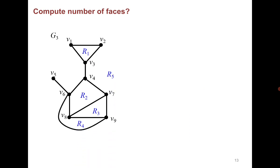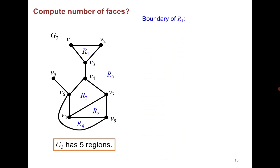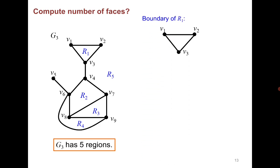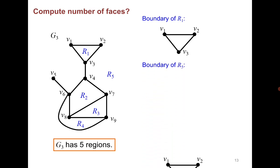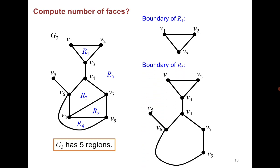The number of faces comes out to be 5. The boundary of the first face is simply a triangle, and the boundary of the exterior face R5 is also identifiable from the drawing.